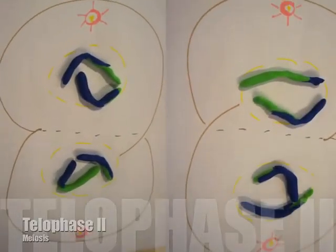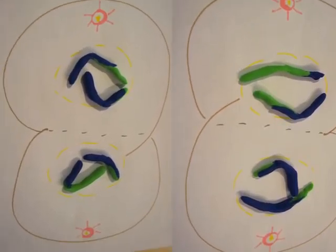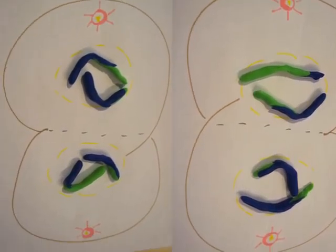Telophase II happens after anaphase II, and is the final phase of meiosis. Here the chromosomes condense into chromatin, and the nuclear envelope forms once more. Cytokinesis occurs as it did in mitosis.